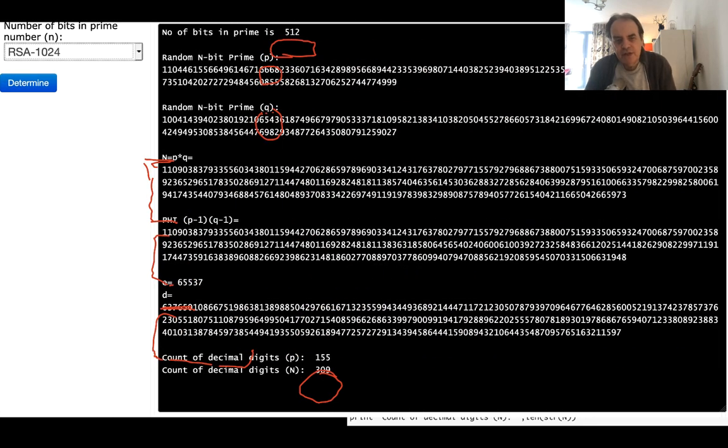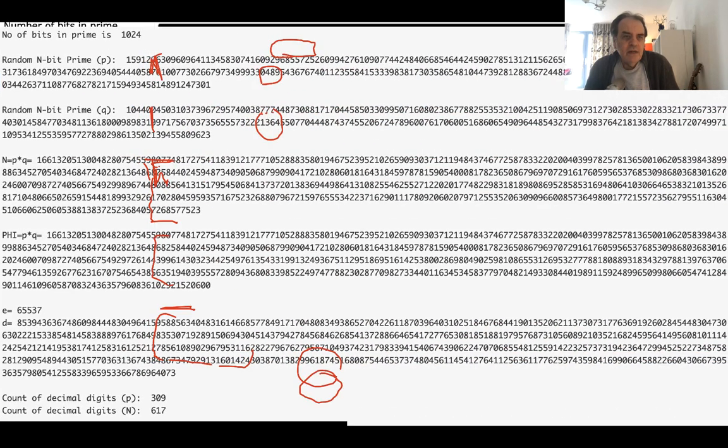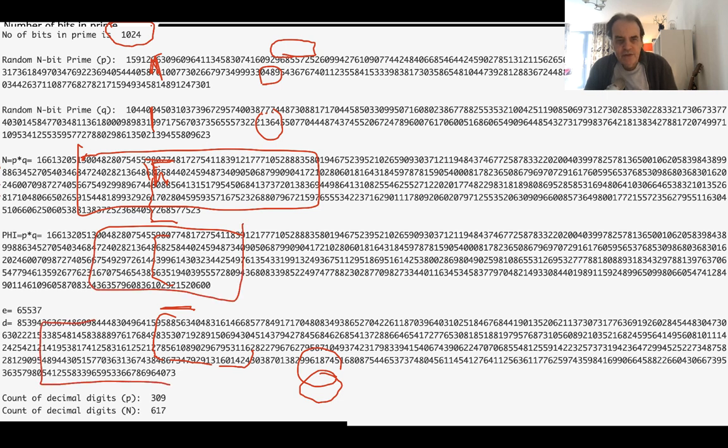1024 - obviously it's getting bigger now for our prime numbers, larger value of n. Now we have 309 decimal characters in n. And this is 2048 bits RSA, so we have two prime numbers which are 1024 bits long. There's our n value, there's our phi value, and you can see the decryption key is quite large and we get 617 characters for that one.